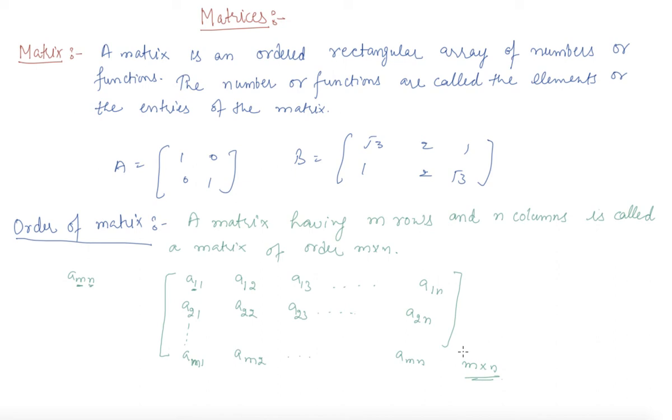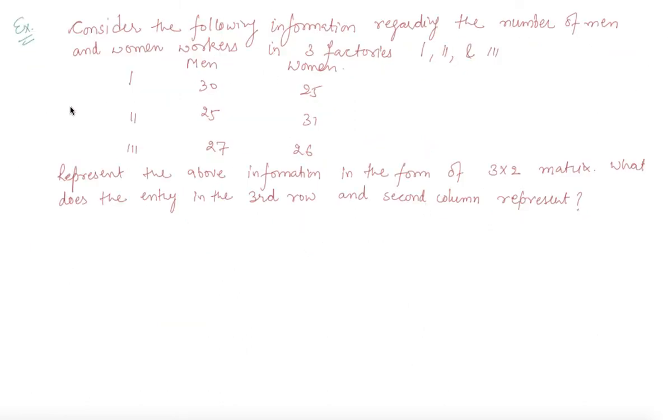Now let us discuss a question based on this. Here we are given a question: consider the following information regarding the number of men and women workers in 3 factories. In factory 1, men are 30 and women are 25. In factory 2, men are 25 and women are 31. And in factory 3, 27 and 26 men and women respectively.